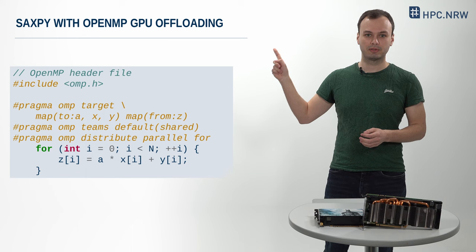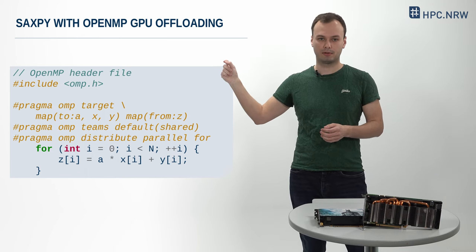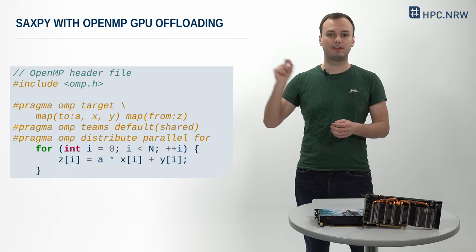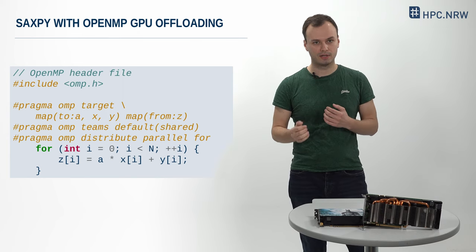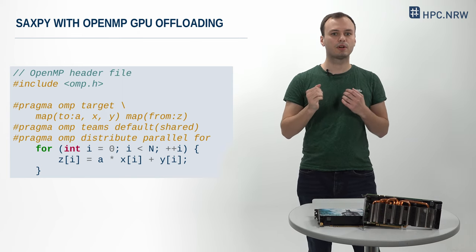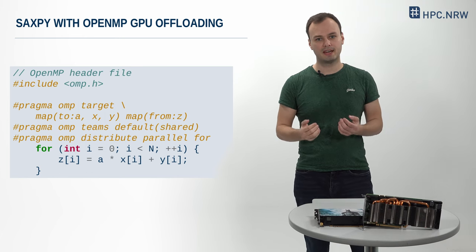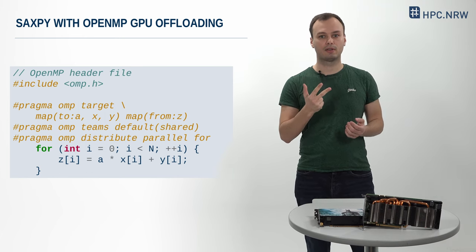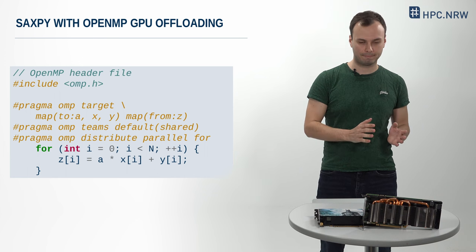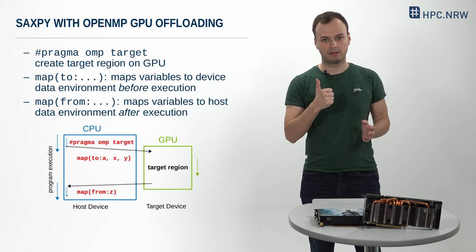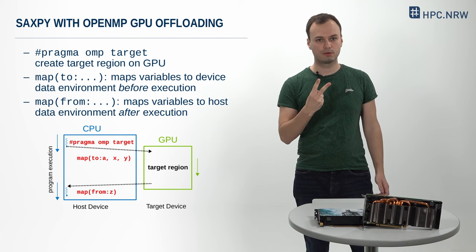Here you can see the code for a SAXPY with OpenMP GPU offloading. Compared with the CPU-only code, the only additions are include omp.h, which includes the OpenMP header file, and three lines of OpenMP directives for GPU offloading. The first line of the OpenMP directives is separated into two parts.